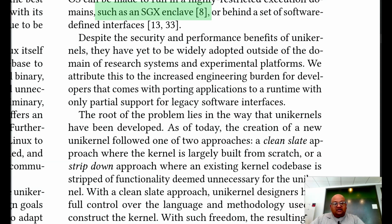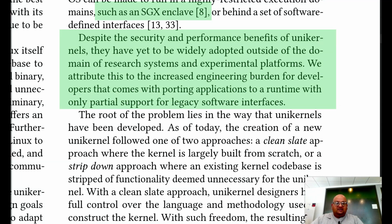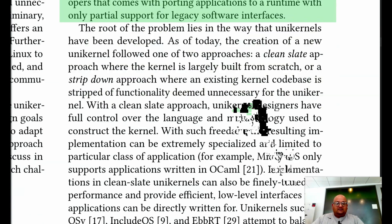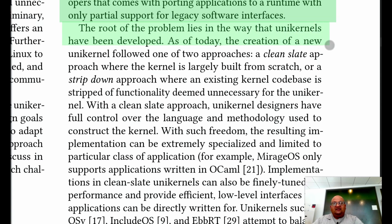So it looks like unikernels have pretty compelling advantages — they are faster, smaller, boot very quickly, and are more secure — and yet they haven't become very mainstream. You tend to build unikernels for only highly specialized or very research kinds of systems. The authors claim that the main reason for that is the way current unikernels have been built and the lack of convenience in building and developing unikernels using the current approaches.